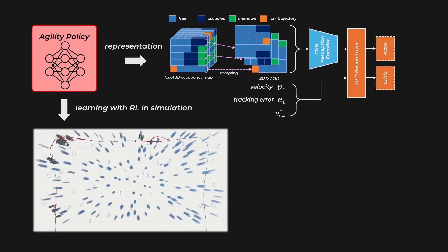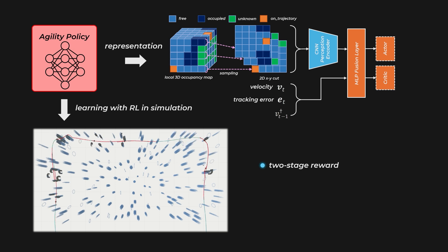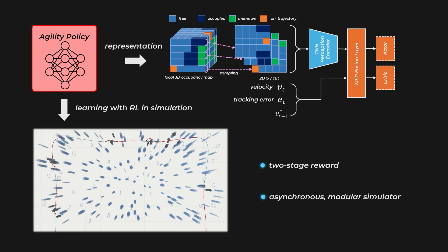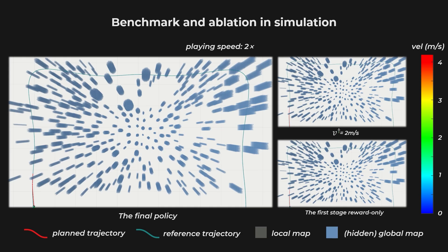The policy is optimized by online reinforcement learning in simulation. We use a two-stage reward and pre-training fine-tuning training pipeline to make learning efficient. The simulator exhibits restrictions consistent with those at deployment — for example, data is generated asynchronously in modules to model the important factor of perception latency. We simulate complex environments to evaluate the policy, which statistically far outperforms the constant agility baseline as well as the policy that uses only one stage of training.